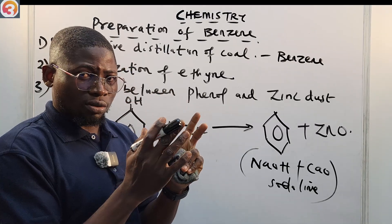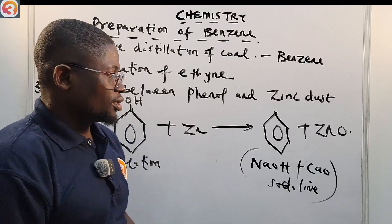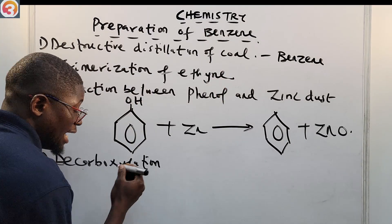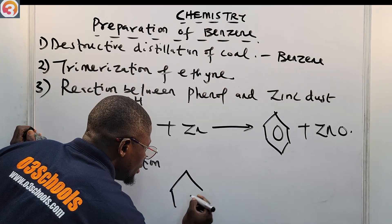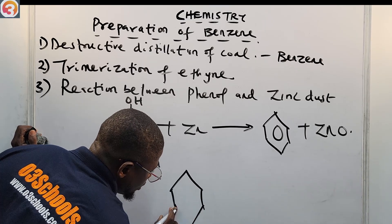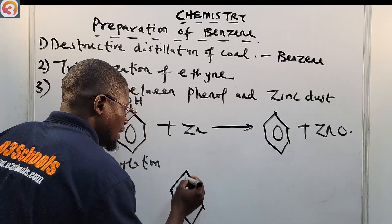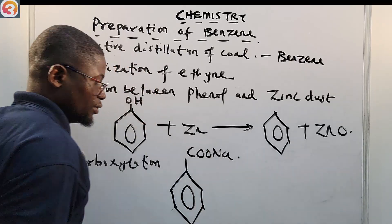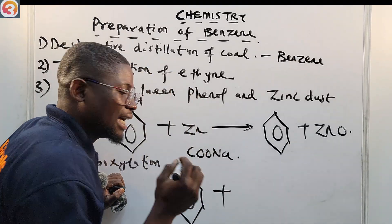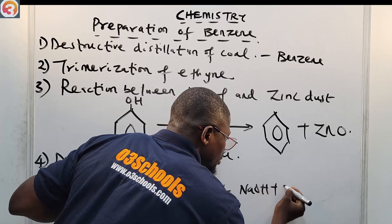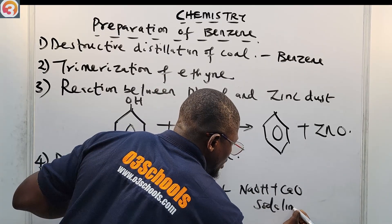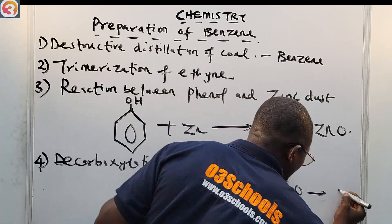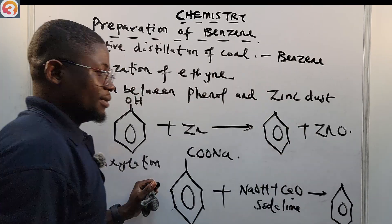So the decarboxylation reaction: we have benzoic acid — a benzene ring with a carboxylic acid group — and we take the salt of the carboxylic acid, for example the sodium salt (COONa). We react this with soda lime (NaOH + CaO), and it removes the carboxylate group from the ring, giving us our benzene ring. Simple as ABC.